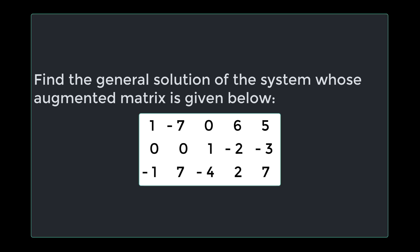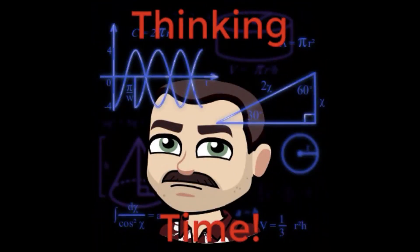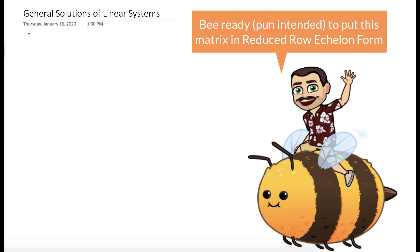The question we're working on today is: find the general solution of the system whose augmented matrix is given below. So in order to do this, what we want to do is take our augmented matrix and put it into reduced row echelon form.